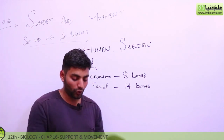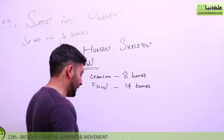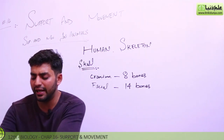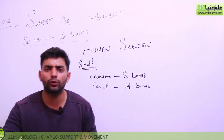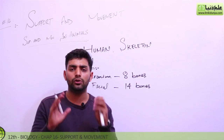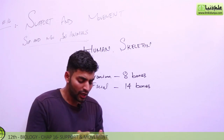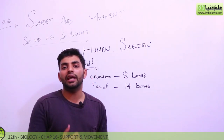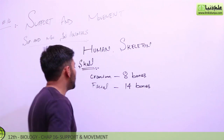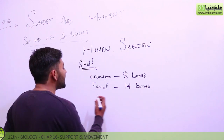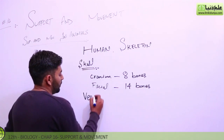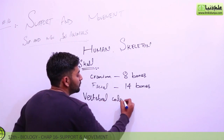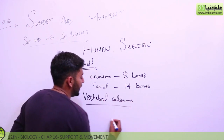Now we will discuss the vertebral column. Before we discuss it, let us clarify what it actually is. This backbone — you will know it as the vertebral column — and basically it has 33 vertebrae.